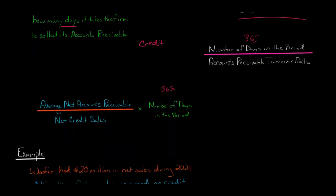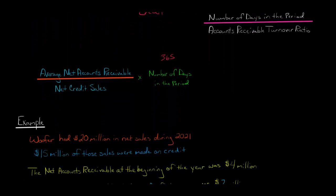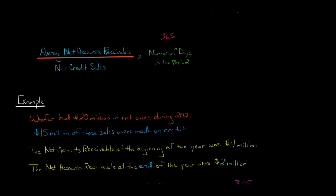Let's do an example. Woofer is a company that makes mechanical dogs. They have $20 million in net sales during 2021, but only $15 million of those sales were made on credit. That's the relevant amount - we don't care about total net sales, we just want the credit sales. The net accounts receivable at the beginning of the year was $4 million, and at the end of the year was $2 million.